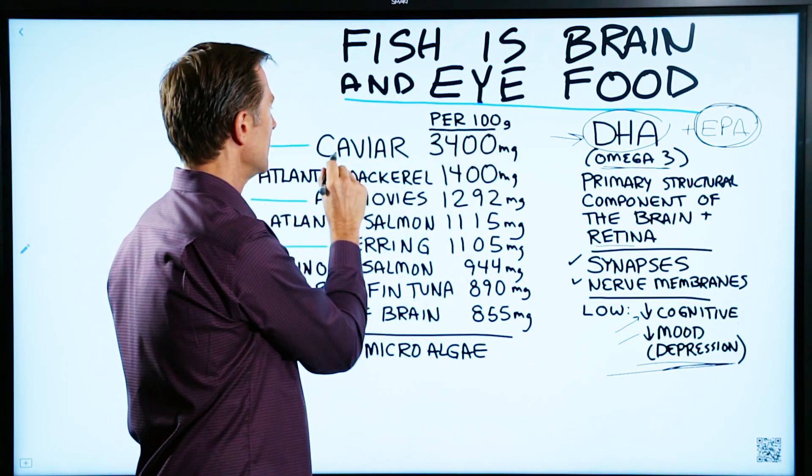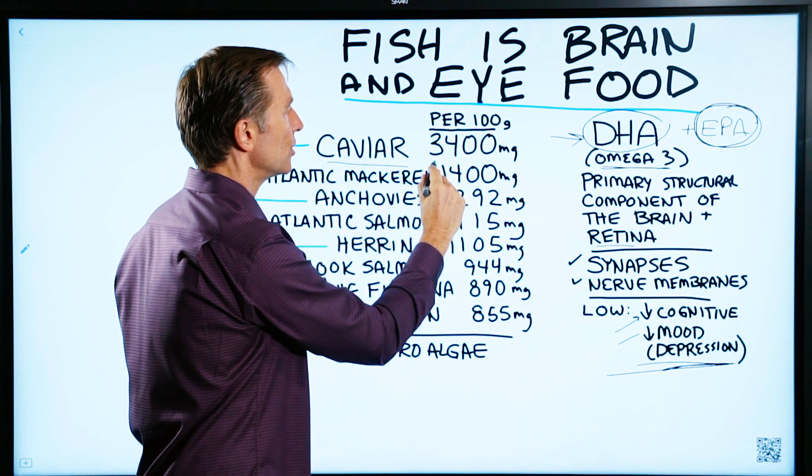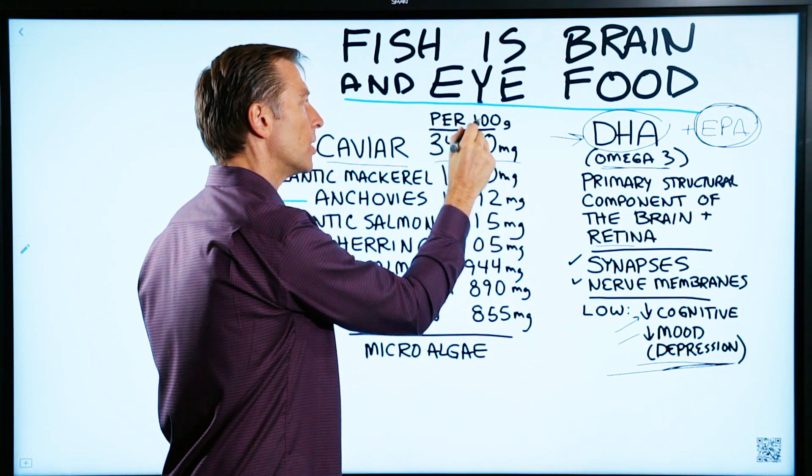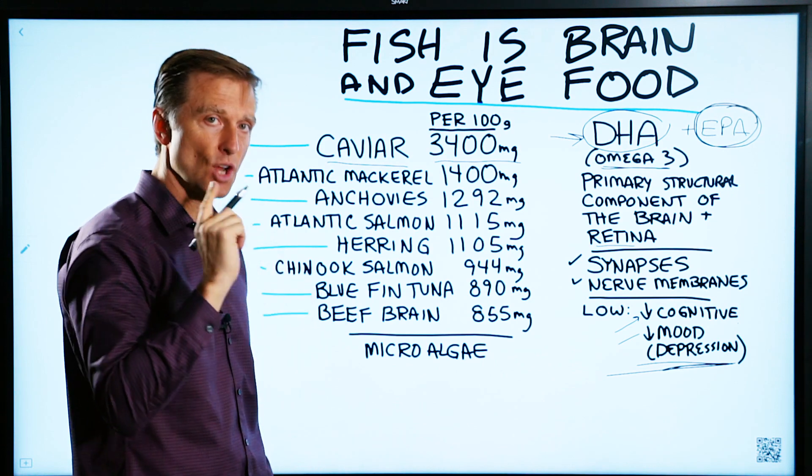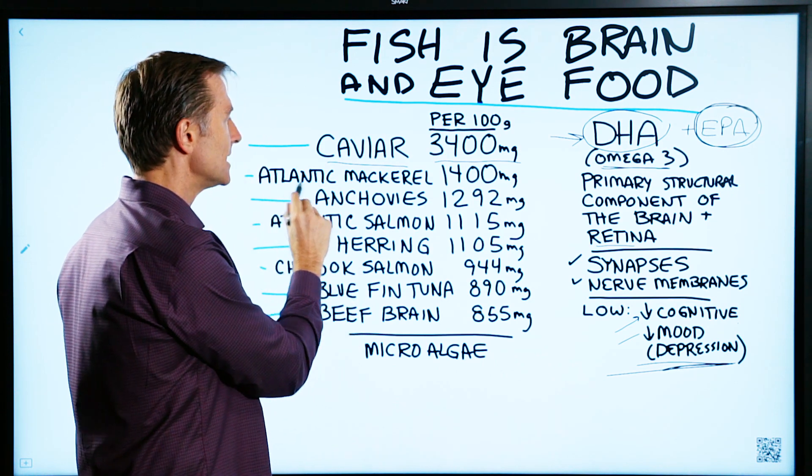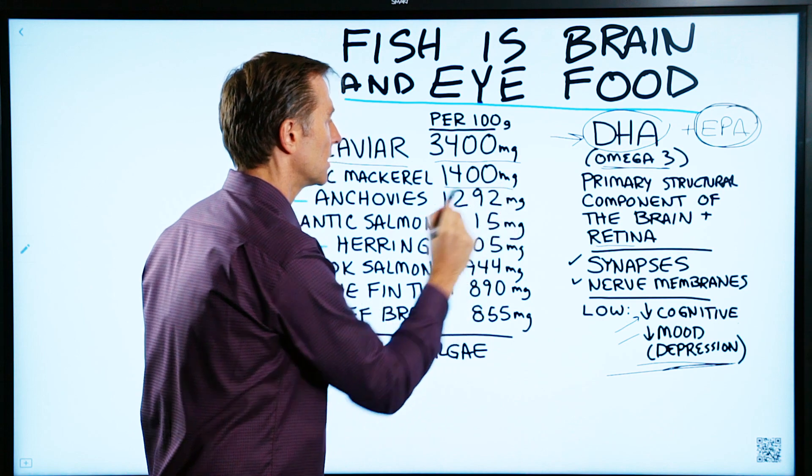Per 100 grams, it's caviar. That has 3,400 milligrams per 100 grams. So caviar is number one. Number two, Atlantic mackerel at 1,400 milligrams.